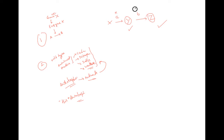If there is a mutation in enzyme B, this organism will not survive unless we provide Z. Even if you provide Y, it will not survive — because Y cannot be transformed into Z since the mutation is in enzyme B.